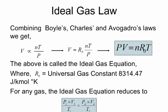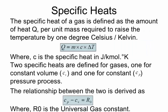If we are given the initial pressure, initial volume, and initial temperature, and at any stage we need to find the final volume or final temperature given the final pressure, we can use this ideal gas law to find those values. The specific heat of a gas is defined as the amount of heat per unit mass required to raise the temperature by one degree Celsius or Kelvin.